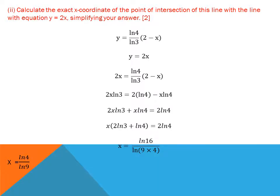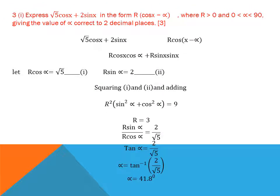Question 3 is trigonometric — learn the trigonometric properties first or it will give you a tough time. Express √5·cos X + 2·sin X in the form R·cos(X − α), where R > 0 and α is between 0 and 90 degrees. Using the compound angle identity: cos(X − α) expands to cos X·cos α + sin X·sin α, so R·cos(X − α) becomes R·cos X·cos α + R·sin X·sin α.